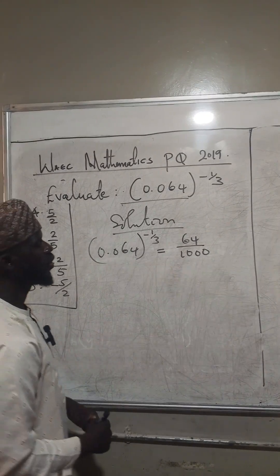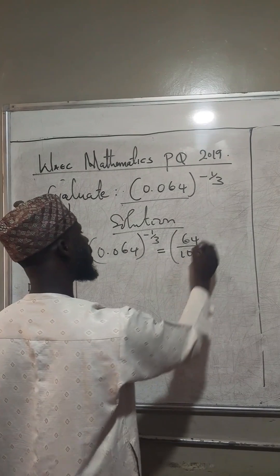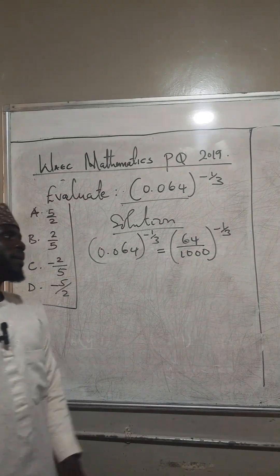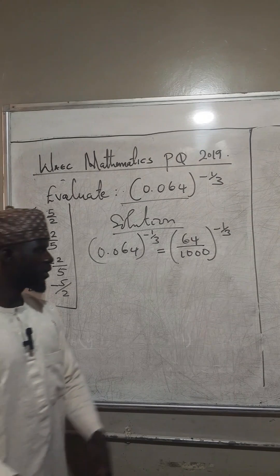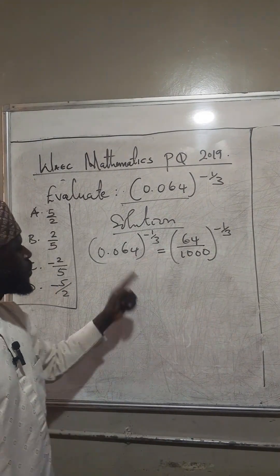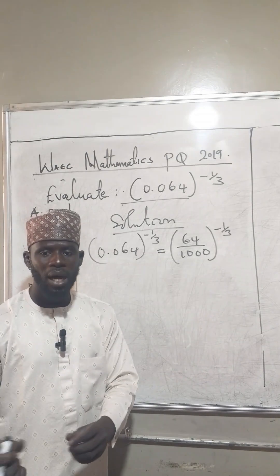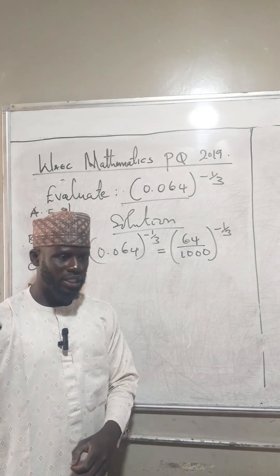And the power is minus 1 over 3. So remember, the negative power, a number raised to a negative power is equal to the reciprocal of the number, but now raised to a positive power.